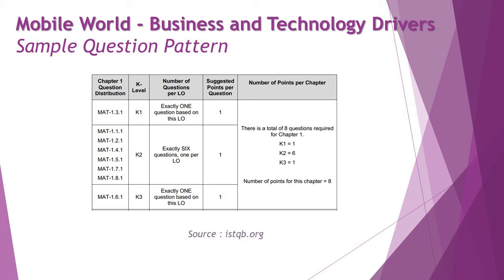So most of the topics covered here will be targeted at K2, but one topic is crucial: section 1.6.1 is going to have a K3 level question as well. Put together, 8 questions and 8 possible points, with equal distribution across all 40 questions and total possible marks of 40. Also highlighting that in the very first chapter, you may expect a few questions — like two or three — with multiple choices, where you may be asked to select two options.